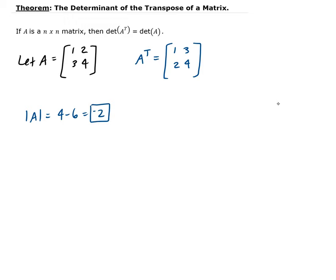The determinant of A transpose is going to be 4 minus 6 as well. So that's going to give us negative 2.